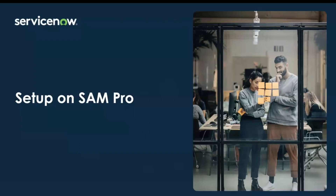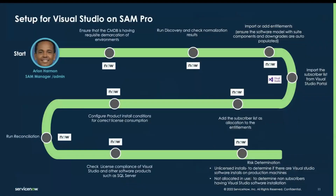Now let's understand what it takes to set up Visual Studio on ServiceNow SAM Pro. First, ensure that the CMDB is accurate with the requisite demarcation of environments — this is critical for accurate license consumption. Then run discovery and check normalization results. Import or add entitlements, and once you add entitlements, ServiceNow content services automatically creates an accurate software model and components with downgrade rights. This ensures that for each subscription purchase, the accurate list of entitled softwares is added so that license compliance is defined accurately.